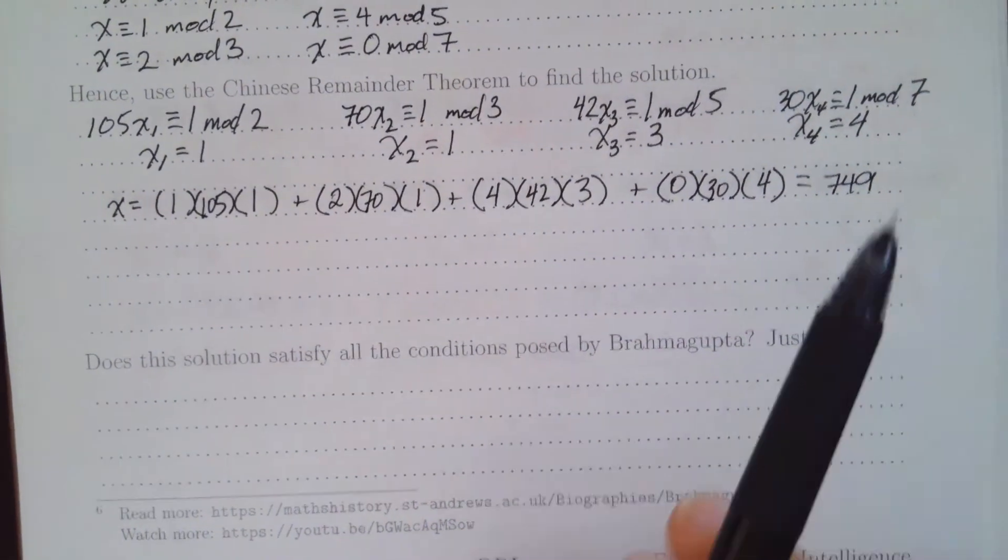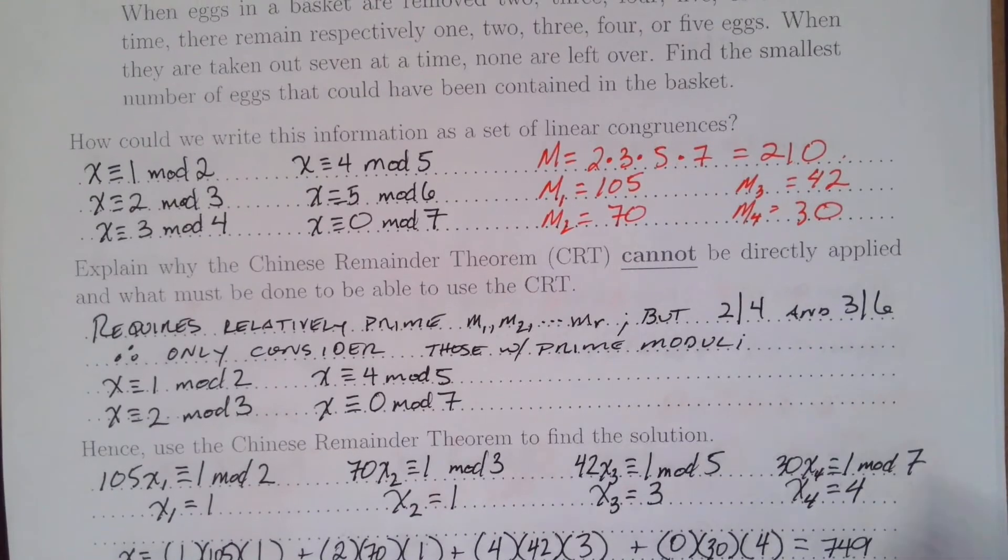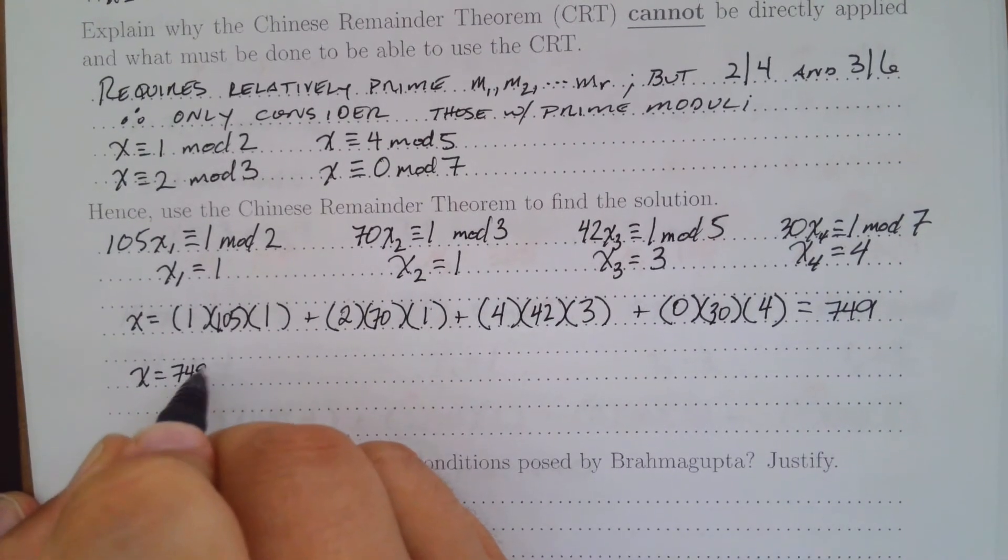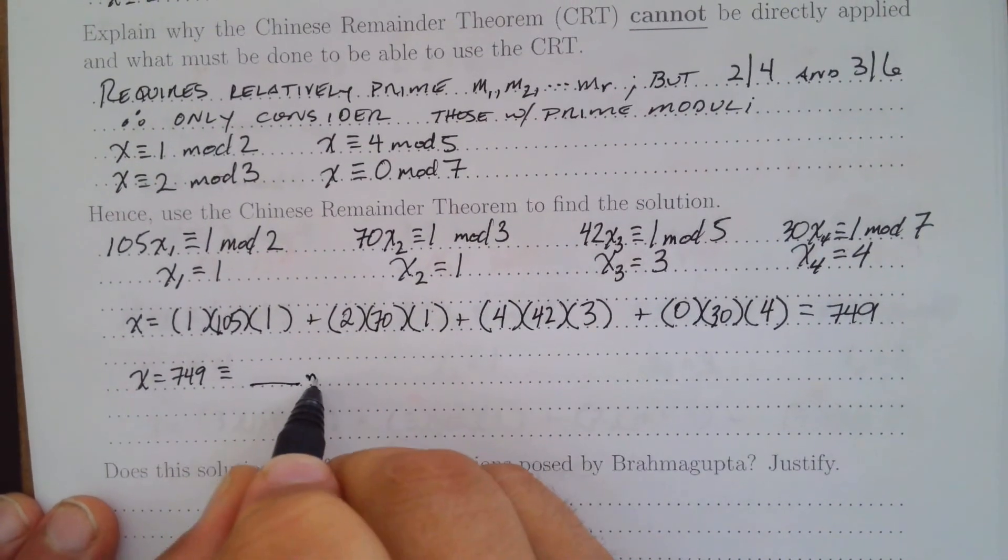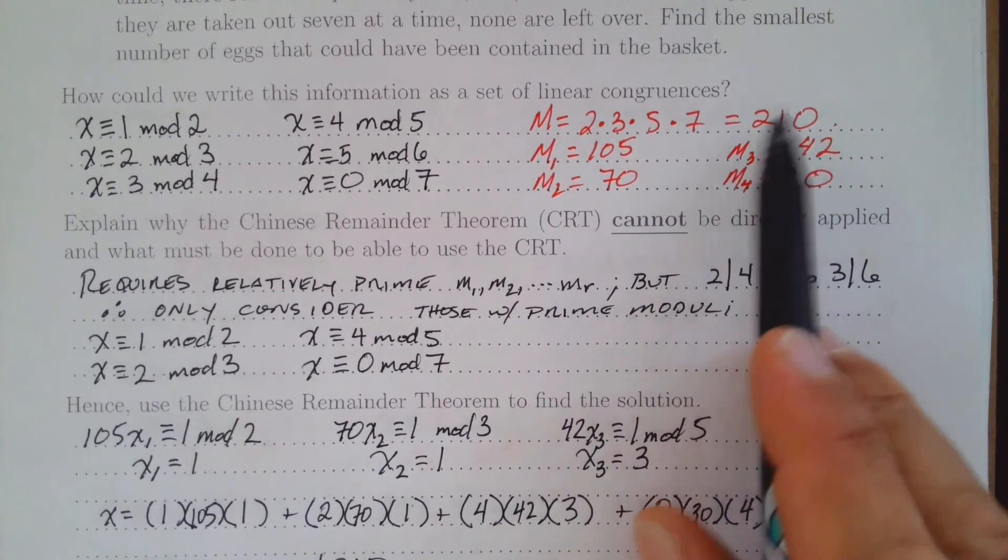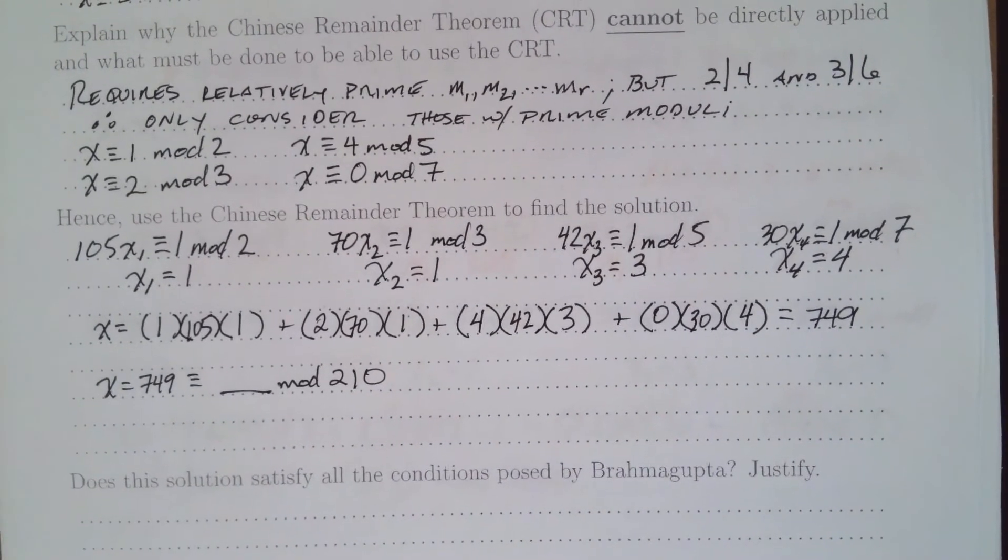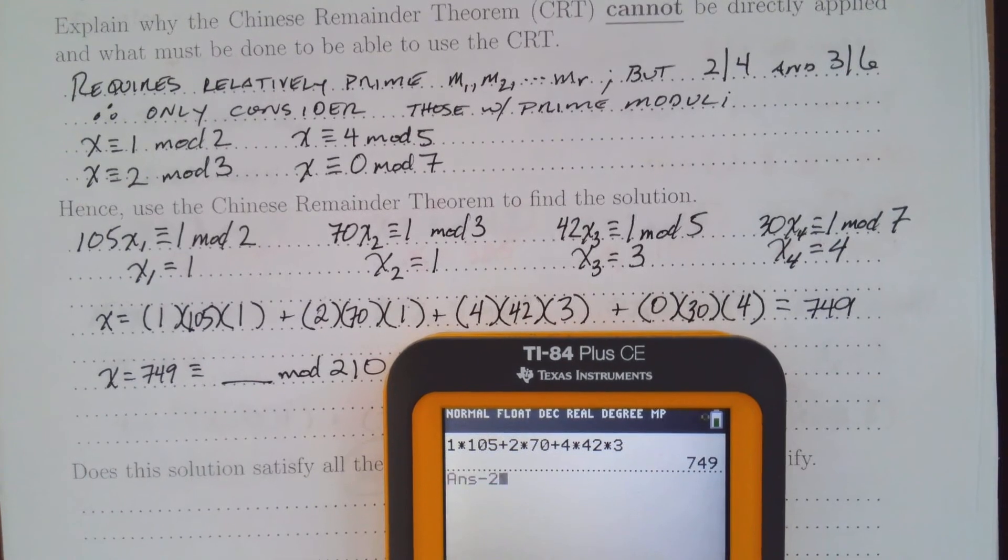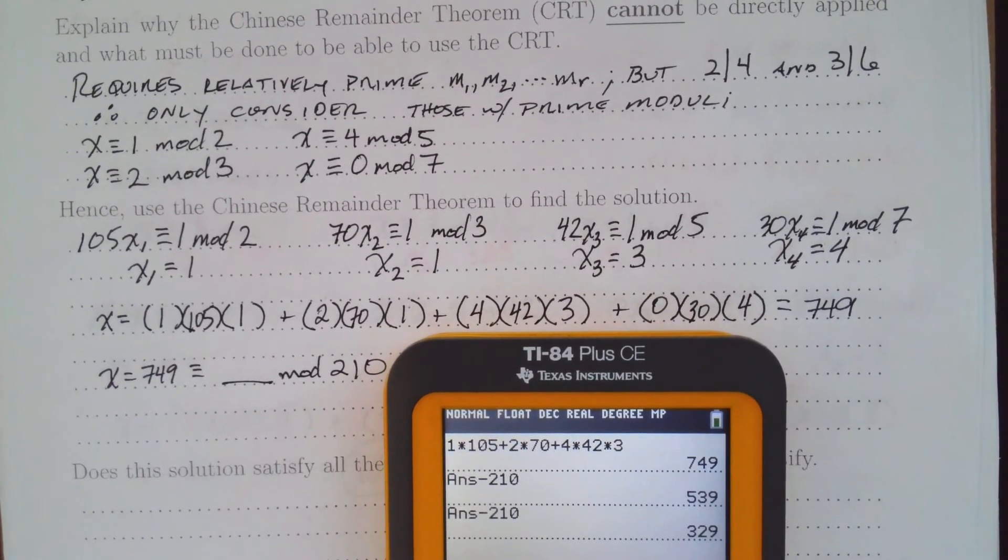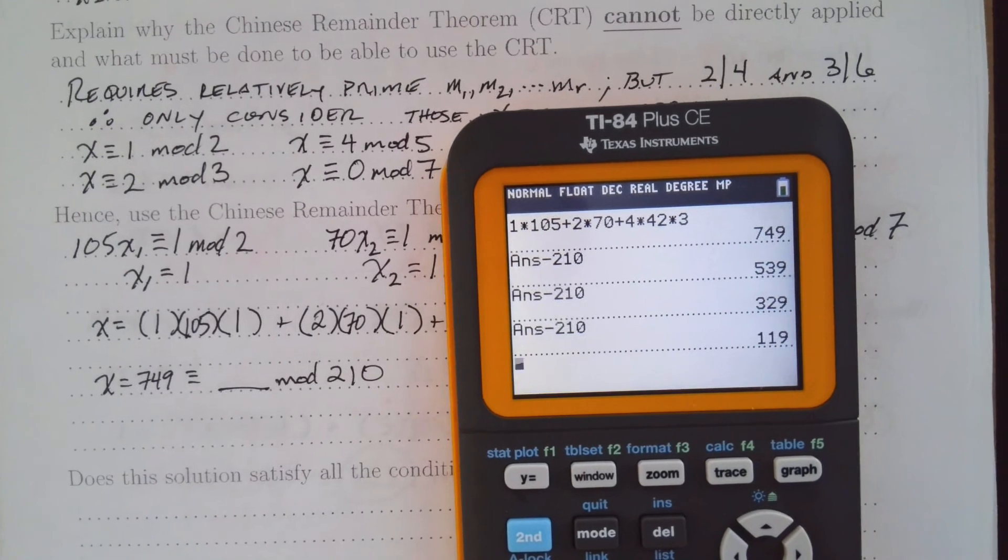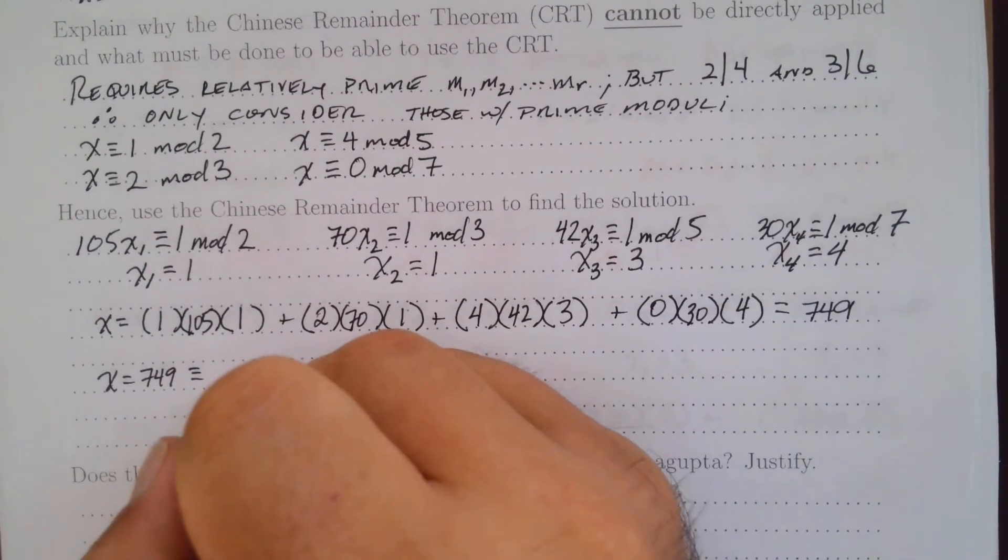Now 749 should work, but we want the smallest number of eggs that could be contained in the basket. I know x = 749 is congruent to something modulo 210, because that's my big M. So I'll just start subtracting 210: 749 minus 210 minus 210 minus 210 gives me 119, and that's less than 210, so it does seem like 119 should be my solution.